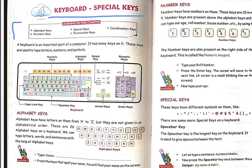Alphabet keys are those which have alphabets on them. Numeric keys are those which have numbers on them. Special keys are those which have certain symbols and signs that we use in our letters or documents.